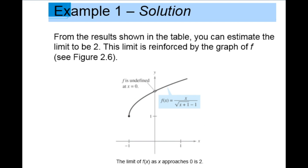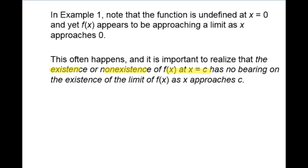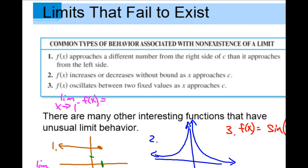But it doesn't always work that way. Number two: an increase or decrease without bound as x approaches c. Number three: an oscillation between two fixed values as x approaches c. There are many other interesting functions that have unusual behavior.